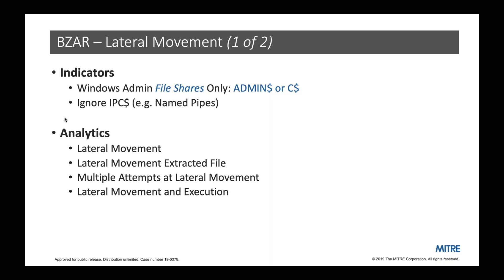The fourth analytic is for lateral movement and execution occurring together against the same endpoint. Let's say lateral movement is legitimate and authorized on your network, and remote execution is also allowed for a different group of administrators. You can whitelist and ignore each individually. But if both of those activities occur at the same time or within a narrow time window against the same endpoint, that's the suspicious combined activity you want to investigate. BZAR also has whitelisting features — they need further development and an update from MITRE is coming in the next weeks or months.